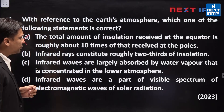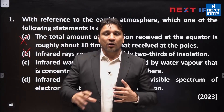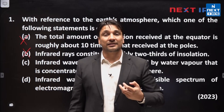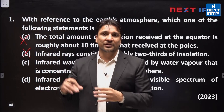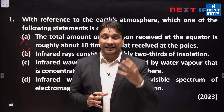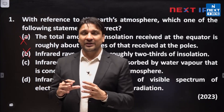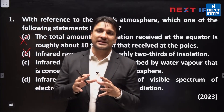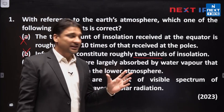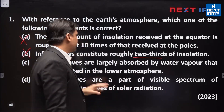The second statement is: infrared rays constitute roughly two-thirds of insolation. This statement is also incorrect. According to experts, incoming solar radiation has high energy waves like X-rays and ultraviolet rays, as well as low wavelength radiations like infrared rays and visible light. The share of infrared rays in incoming solar radiation is around 45 to 50 percent, whereas the share of high energy waves — X-rays and UV rays — is around 10 percent. So two-thirds, meaning about 66 percent, is much higher than the actual value of 45 to 50 percent.